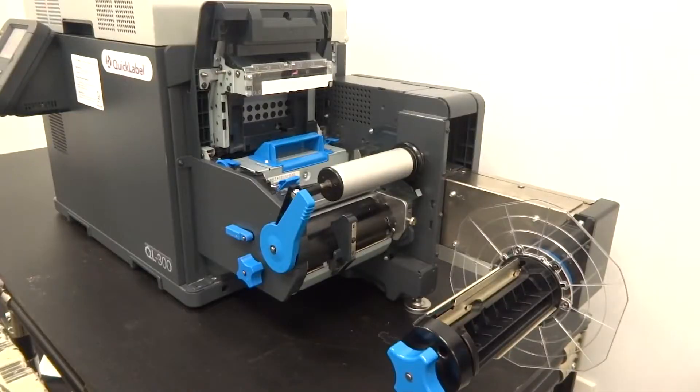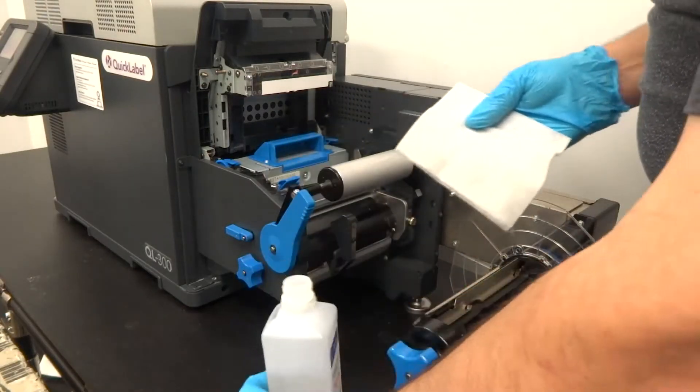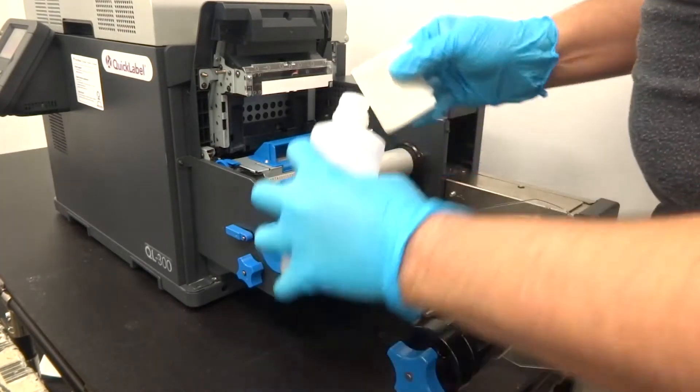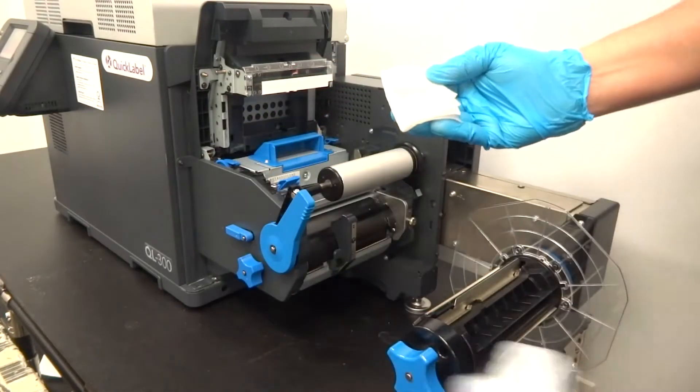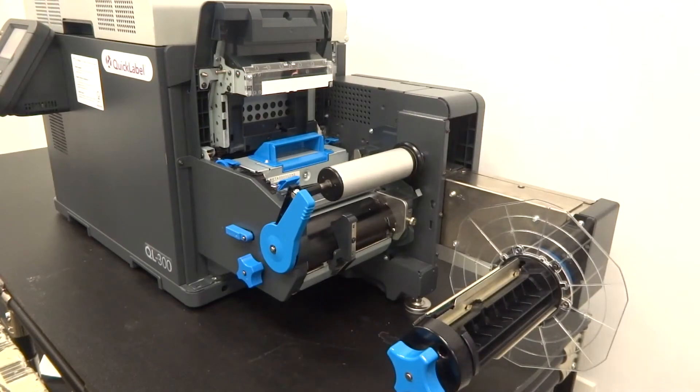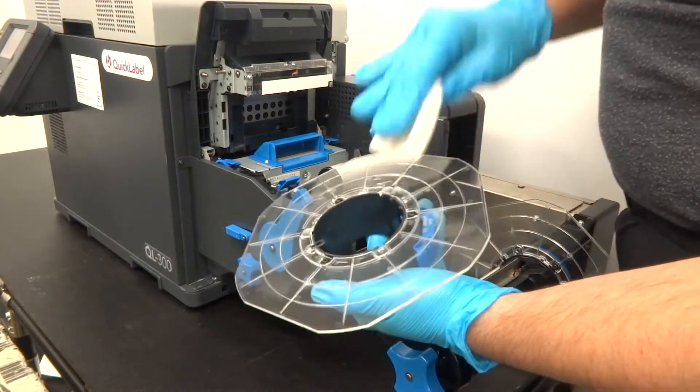Cleaning the unwind unit. Fold a lint-free wipe and moisten it thoroughly with isopropyl alcohol. While cleaning, if you find the wipe has become dirty or dried up, use a new moisten wipe to proceed with the cleaning.